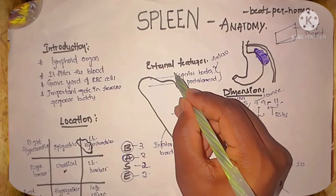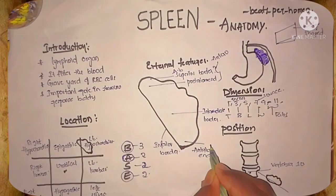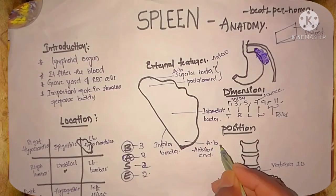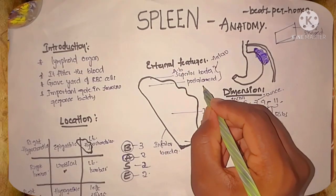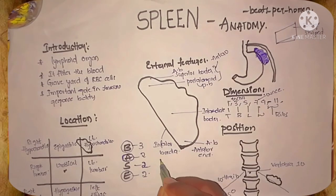Coming to the anterior basal angle, it is a junction between the superior border with anterior end. And the posterior basal angle, it is a junction between the posterior end with inferior border.